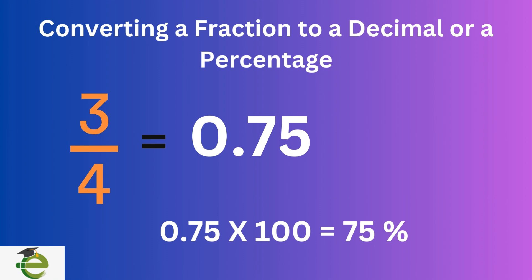Now, to convert a fraction to a percentage, you first convert the fraction to a decimal, then multiply that decimal by 100.